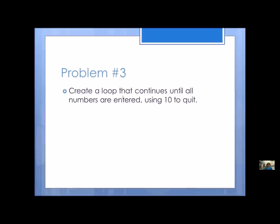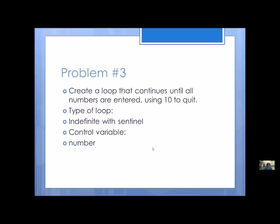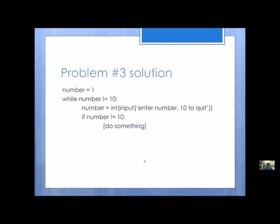Problem number three: create a loop that continues until all numbers are entered, using 10 to quit. This is a clear indication that you have a sentinel, so the type of loop is indefinite with a sentinel. The control variable is the number the user is entering, and the condition is as long as the number is not the sentinel. You could also redo the solution using a priming read and a modification read, which would look a little bit better.